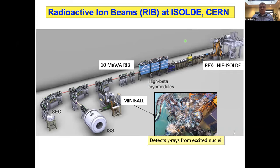Essentially, what we've done is take radioactive ions produced by bombarding a primary target of thorium carbide or uranium carbide. These ions are extracted, injected into the post-accelerator after being charge-bred, and the post-accelerator consists of normal and superconducting accelerating cavities. The accelerated ions can be accelerated up to about 10 MeV per nucleon and directed into a number of beam stations, one of interest to us being MiniBall.